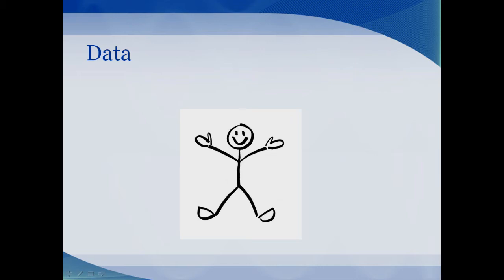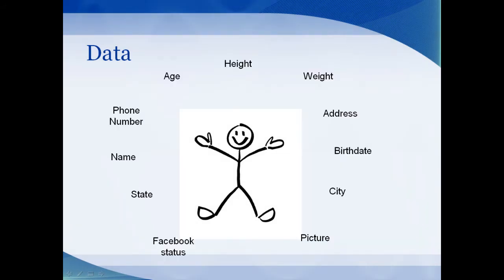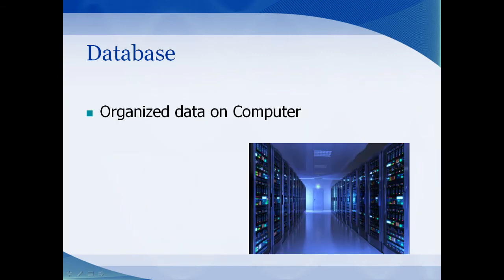A database is stored data. What is data? Data is just the facts. For example, what about you? You have your name, your age, your height, weight, birthday — these are all facts about you and it's still data. It can be a little random, so in order to organize your data, you can use a database. A database is just organized data that's stored on a computer.